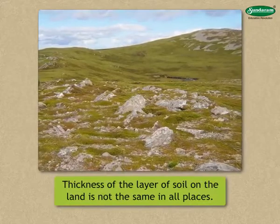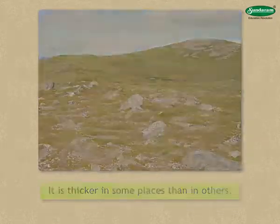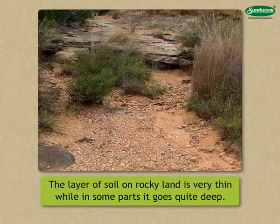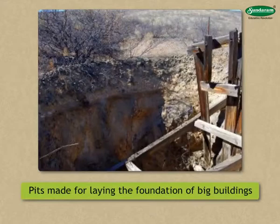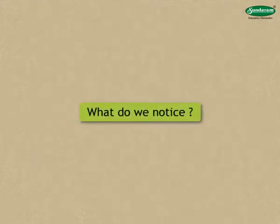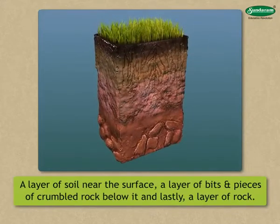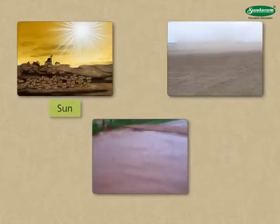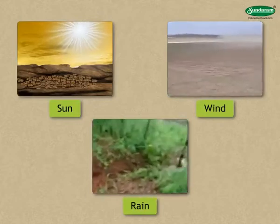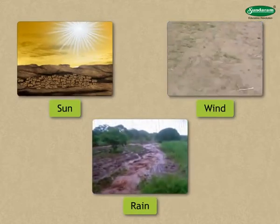The thickness of the layer of soil on the land is not the same in all places — it is thicker in some places than in others. The layer of soil on rocky land is very thin, while in some parts it goes quite deep. Observe the pits made for laying the foundation of big buildings, digging a well, or the hillsides along which roads are built. In all these places, we see a layer of soil near the surface, a layer of bits and pieces of crumbled rock below it, and lastly a layer of rock. The action of the sun, the wind, and rain results in the wearing down or weathering of rocks and stones into fine particles. These particles form a layer of soil on the land.